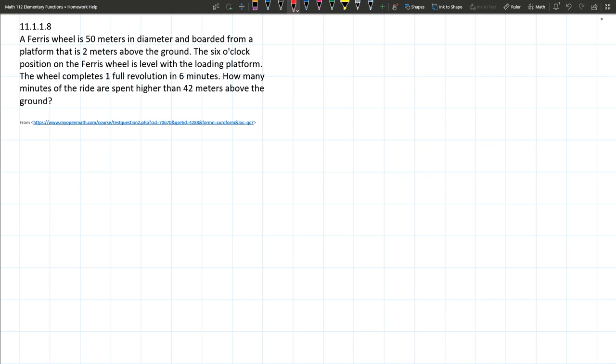So we got a Ferris wheel 50 meters in diameter and we'll just draw that as a circle. It's boarded from a platform that's two meters above the ground at the six o'clock position on the Ferris wheel.